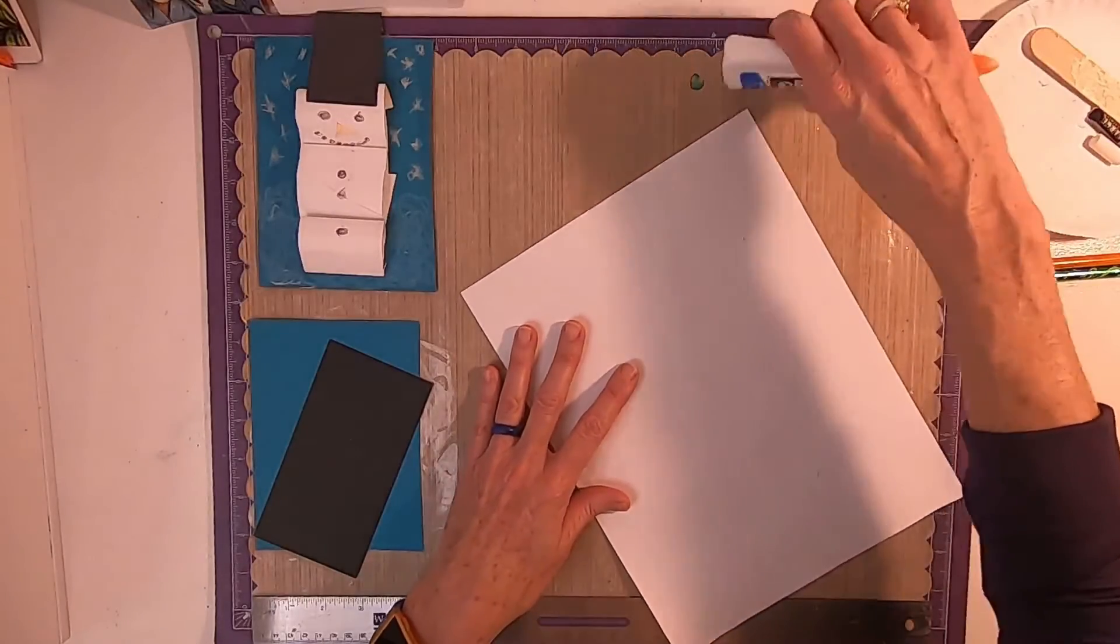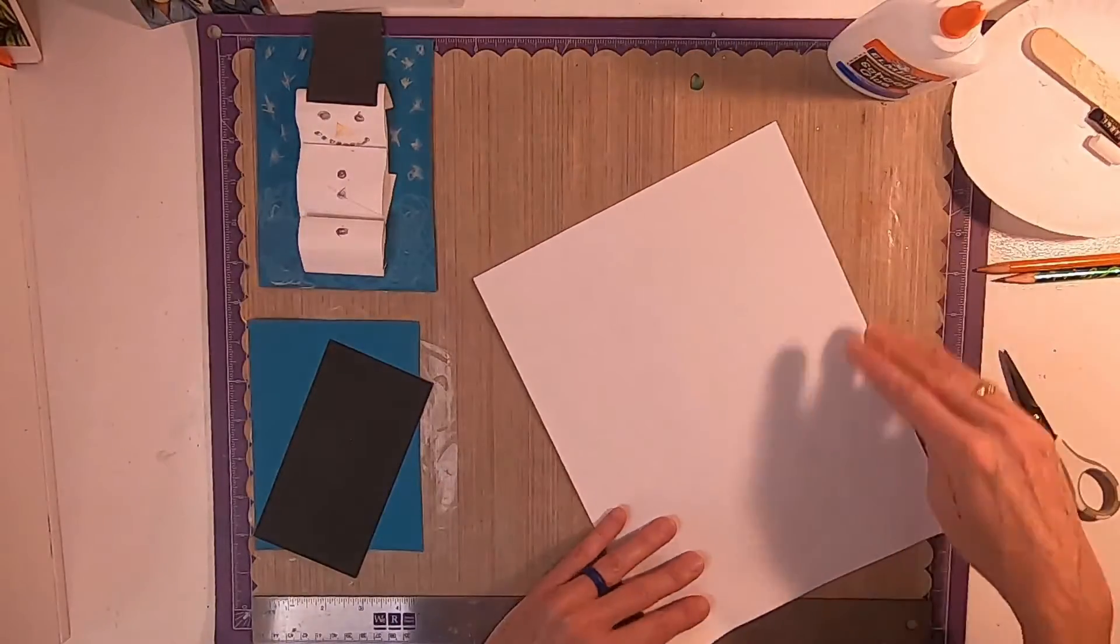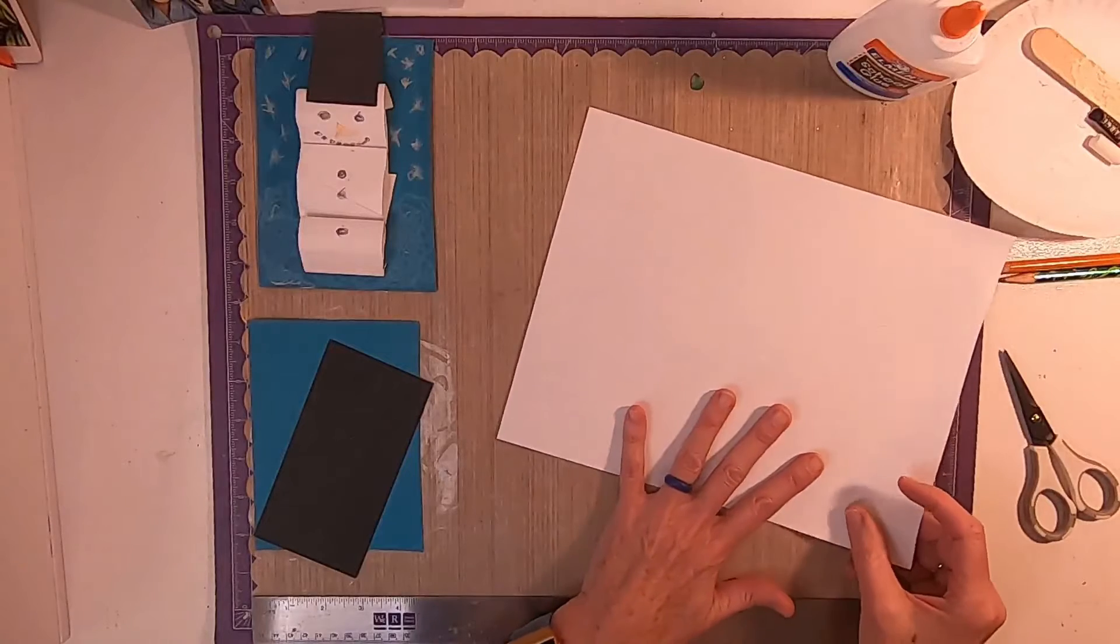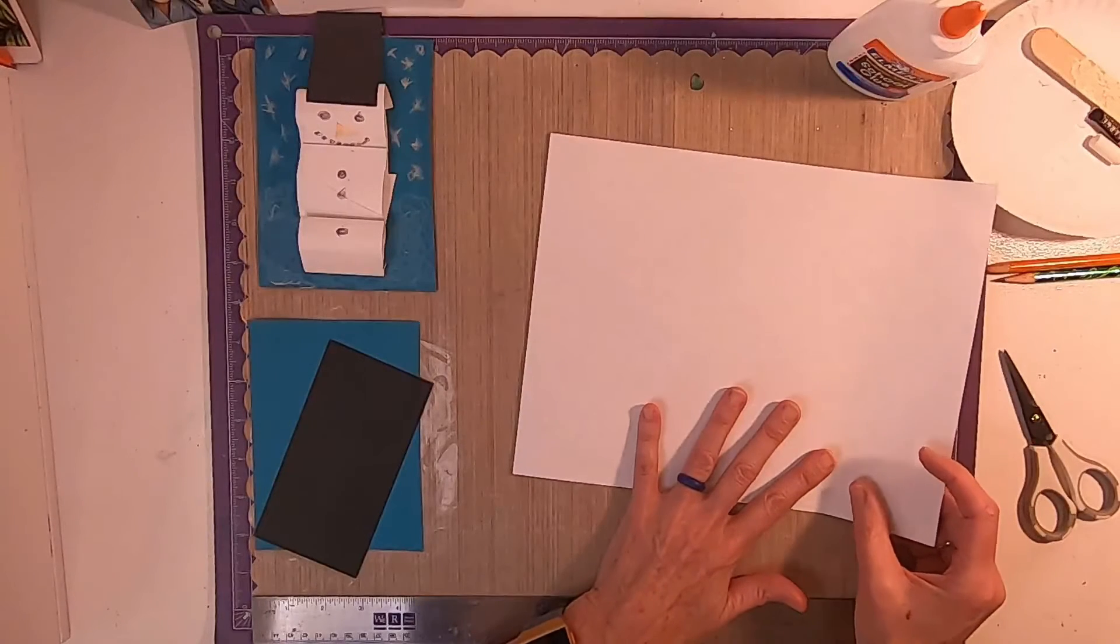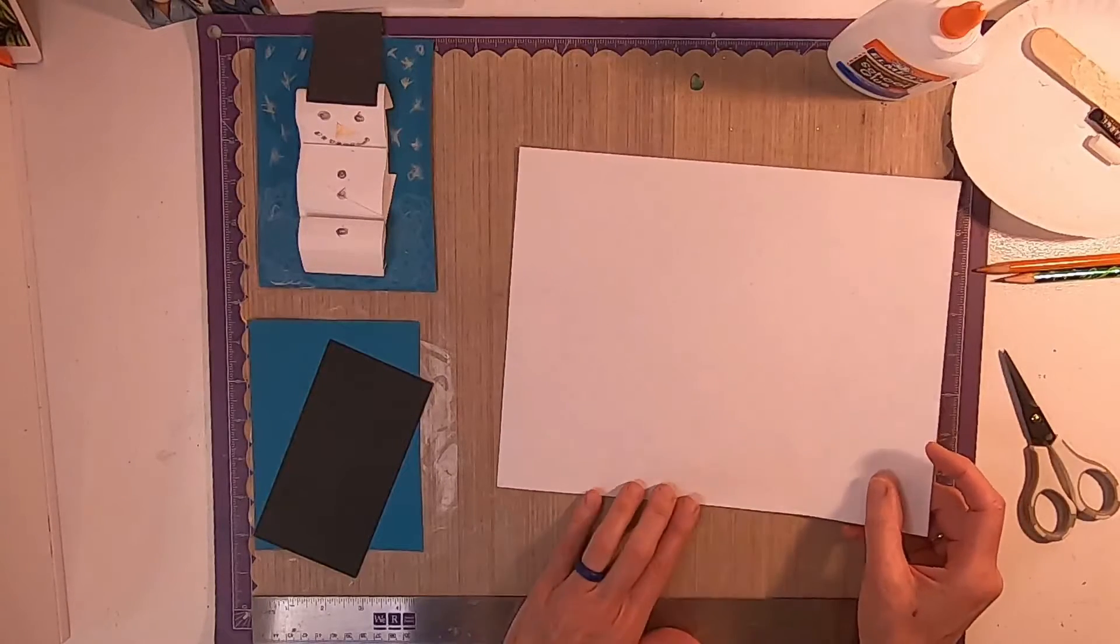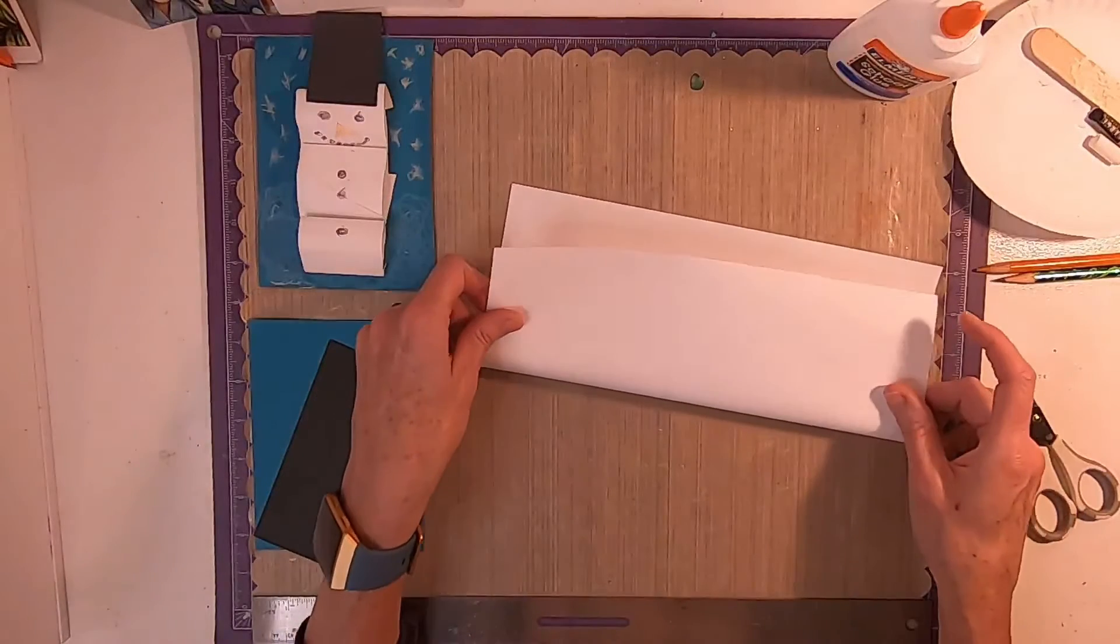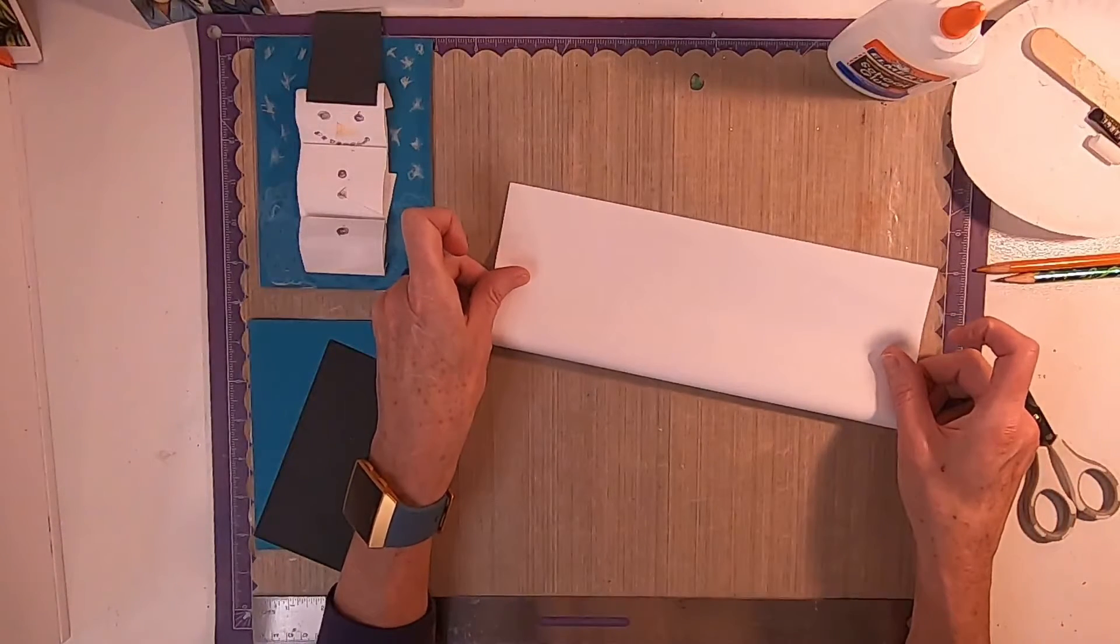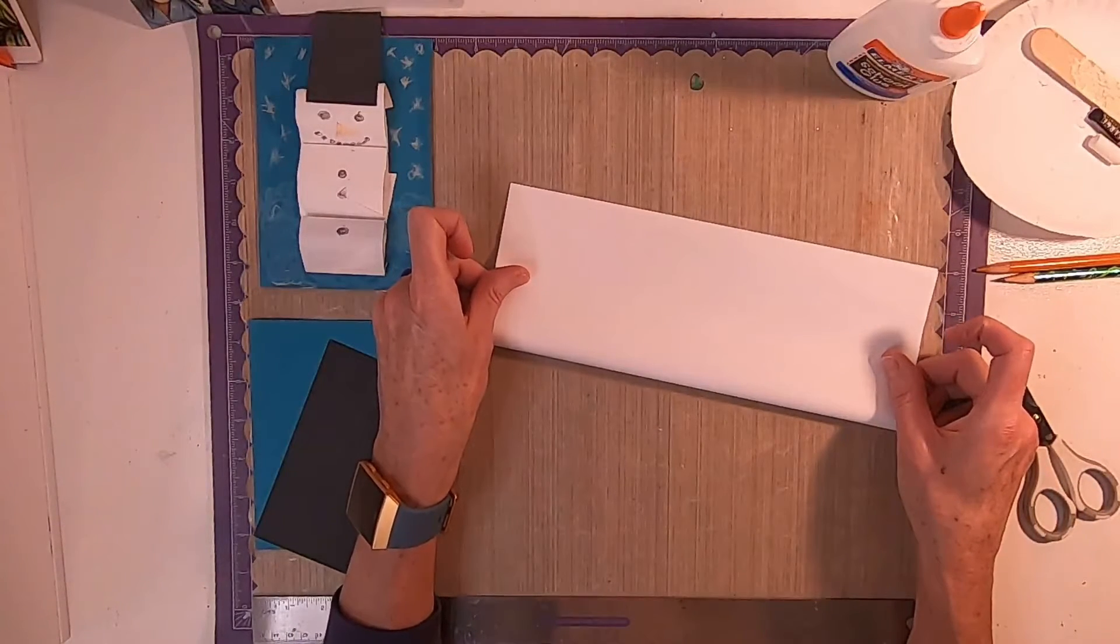So, the first thing we want to do is fold our white piece of paper in a hamburger shape. Yes, remember? This is a hot dog shape because it's long like a hot dog. This is a hamburger shape.